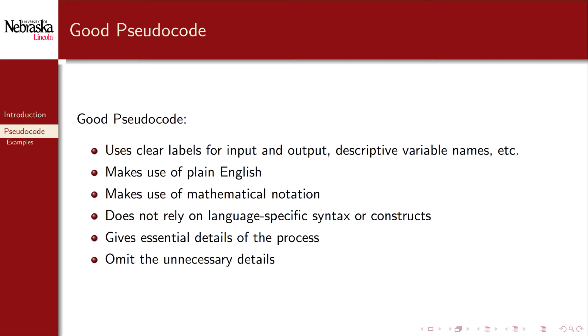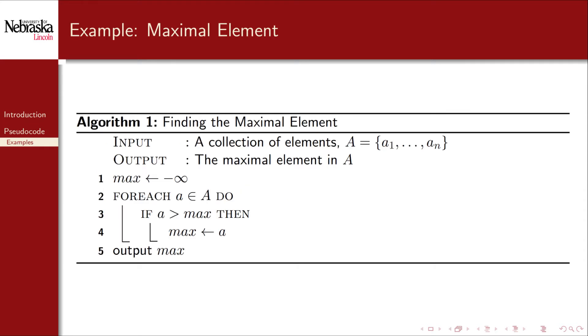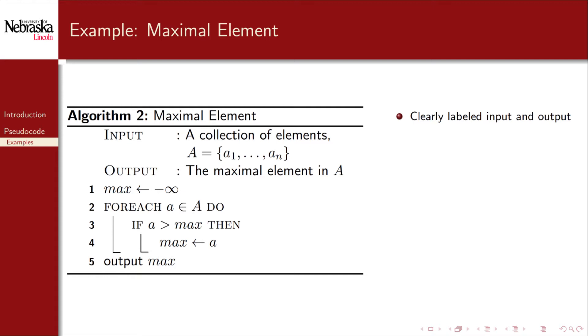To understand the art of pseudocode we'll look at a couple of examples. I've used a typesetting system called LaTeX and a LaTeX package called Algorithm2E to produce these examples. Our first example is pretty simple. It's an algorithm to find the maximal element in the collection. At the top of the pseudocode we've clearly labeled the input and the output. This is also an opportunity to state any assumptions about the input. In this case we've declared that it's a collection, it's finite, and we've given its cardinality a variable, n.